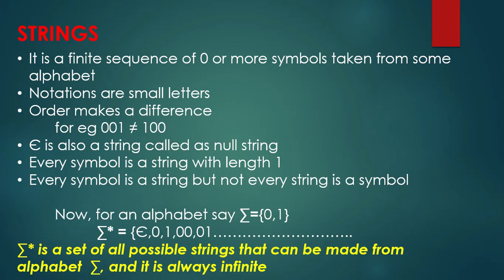For an alphabet sigma equal to {0,1}, sigma star contains: epsilon, 0, 1, 00, 01, and so on. We have the alphabet {0,1} and from it we can generate a number of strings. Sigma star is the set of all possible strings that can be made from alphabet sigma, and it is always infinite — it has no end.